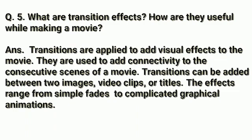The fifth question is: what are transition effects, and how are they useful while making a movie? Answer is: transitions are applied to add visual effects to the movie. They are used to add connectivity to the consecutive scenes of a movie. Transitions can be added between two images, video clips or titles. The effects range from simple fades to complicated graphical animations.